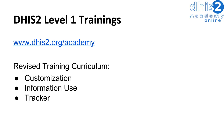The new Level 1 trainings are separated into three areas: customization, information use, and tracker. We have described various aspects of these within this Fundamentals Level course. Each of these academies goes into much more detail, looking at different types of use cases and principles associated with these concepts.